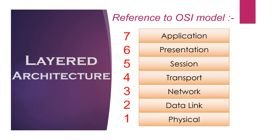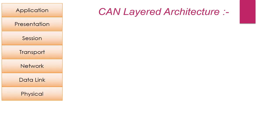According to the OSI reference model, the CAN architecture defines two layers: data link and physical. Let's try to understand the functions of these two layers in more detail.